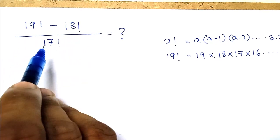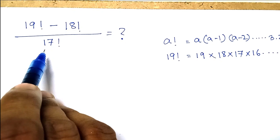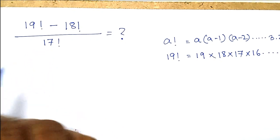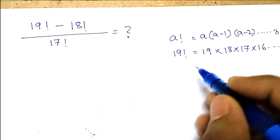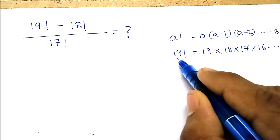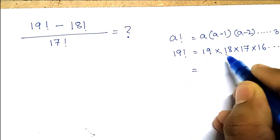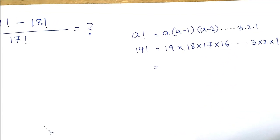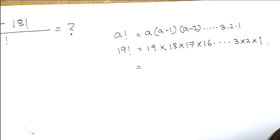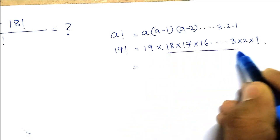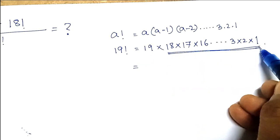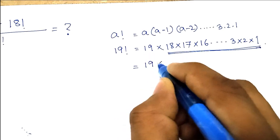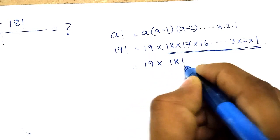But there is an easy method also. Look here: factorial of 19 is 19 into 18 into 17 into 16 and so on up to 1. Notice one thing — this part of the expression is actually 18th factorial, so we can write this as 19 into 18th factorial.